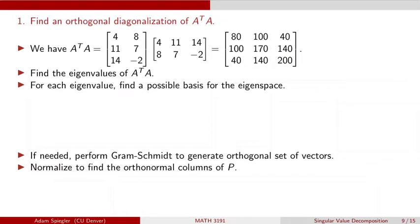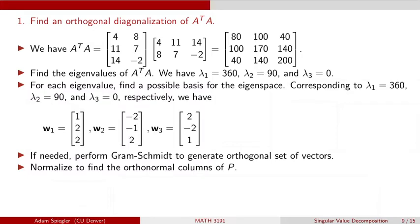The first thing to do is find the eigenvalues of A transpose A. You can verify that we get three eigenvalues: 360, 90, and 0. We also identify the eigenvectors for each eigenvalue. The first eigenvector W1 is 1, 2, 2. The second eigenvector corresponding to eigenvalue 90 is minus 2, minus 1, 2. The third eigenvector W3, corresponding to eigenvalue lambda 3 = 0, is 2, minus 2, 1.